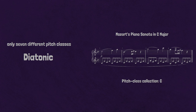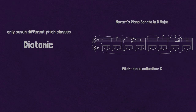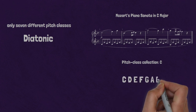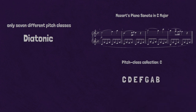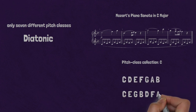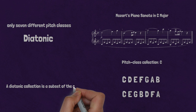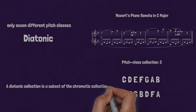Because no ordering guidelines were given, you could have listed C, D, E, F, G, A, B — or C, E, G, B, D, F, A — or any other order. A diatonic collection is a subset of the chromatic collection.